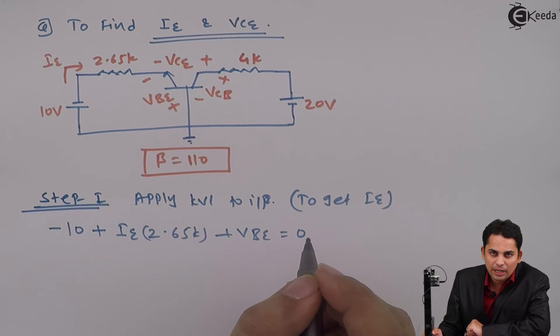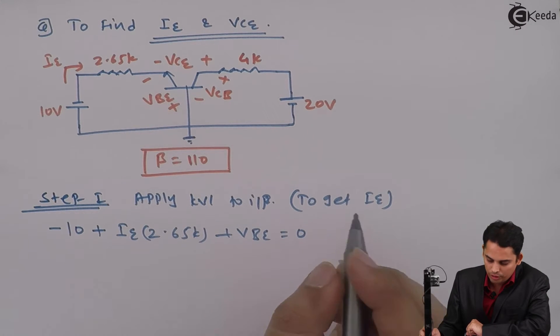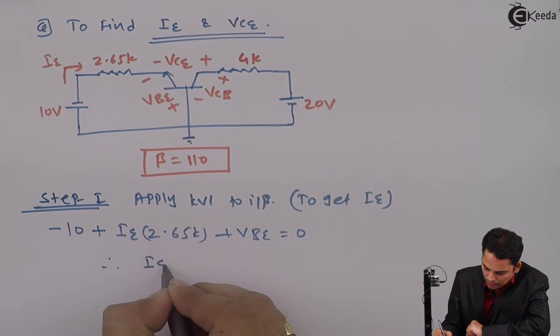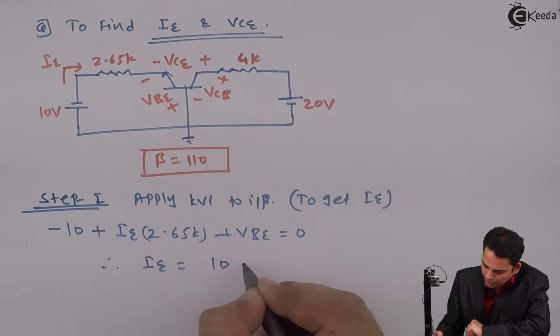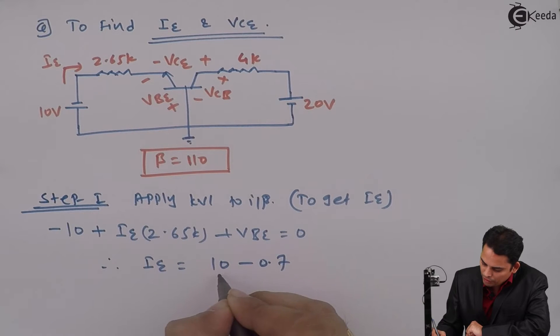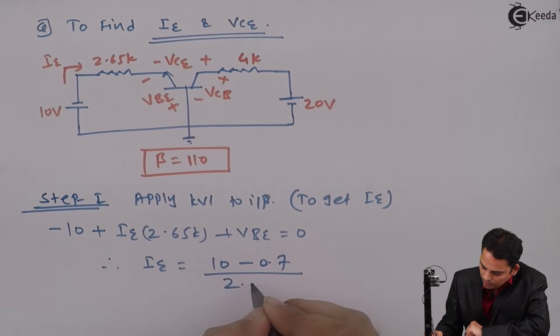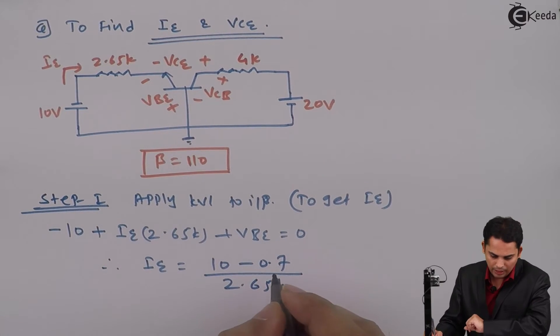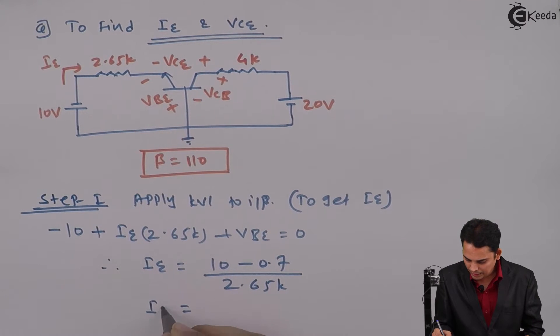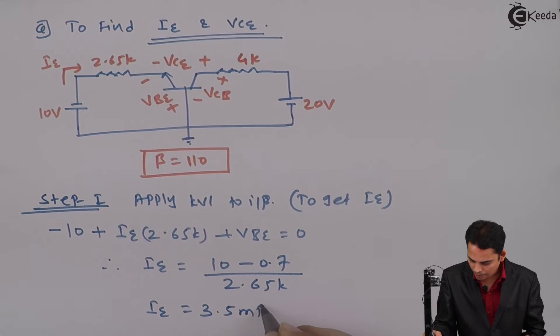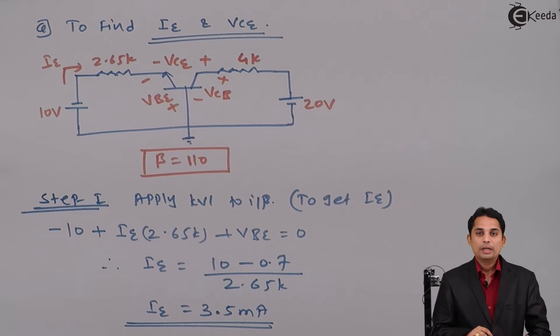Where VBE can be written as 0.7 volts, and hence IE is equal to 10 minus 0.7 divided by 2.65K, and hence emitter current IE is equal to 3.5 milliamperes. This is how we can get emitter current IE from the given circuit.